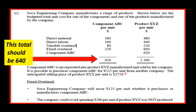The selling price of product XYZ per unit is $27.50. Suka Engineering Company will incur $1.25 per unit whether it purchases or manufactures component ABC. The company could avoid spending $2.80 per unit if product XYZ was not produced. Seeing the word 'avoid,' I will treat it as an avoidable cost.